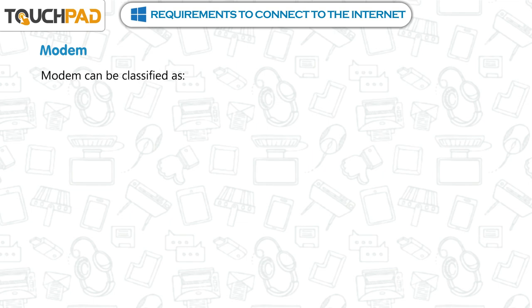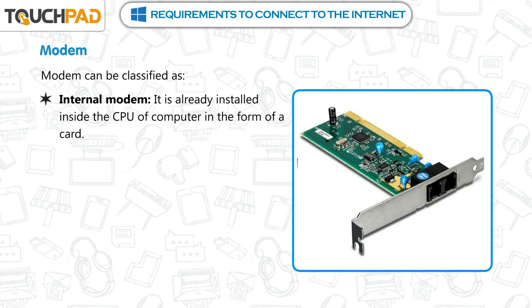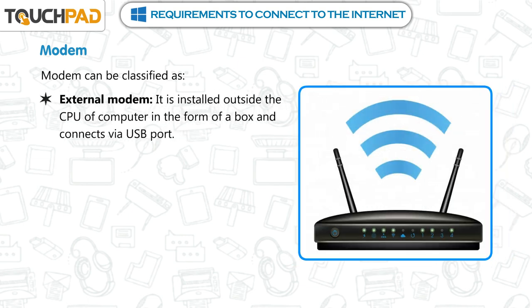Modem can be classified as internal modem — it is already installed inside the CPU of the computer in the form of a card — and external modem — it is installed outside the CPU of the computer in the form of a box and connects via USB port.